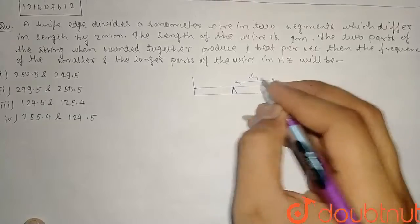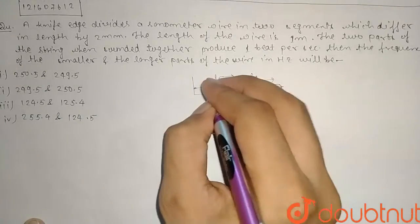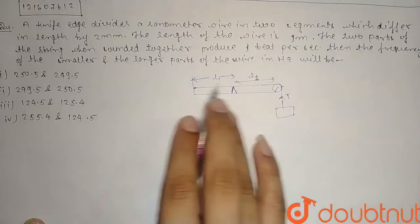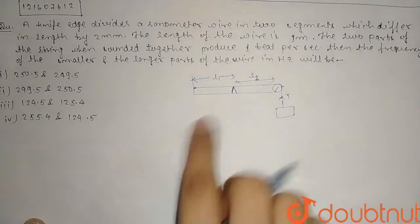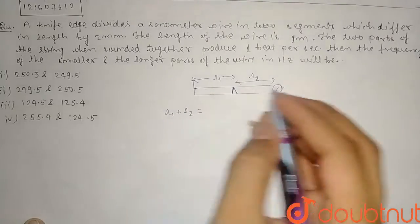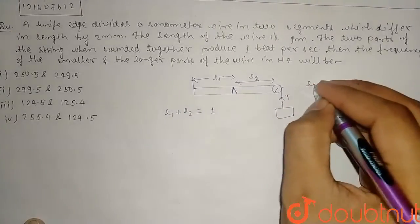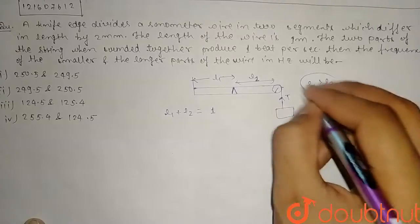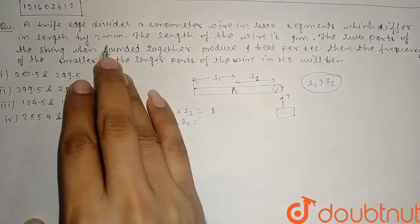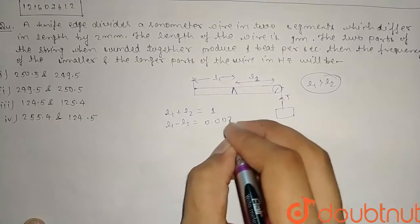Do part mein isko hum log divide karti hain. Wo bol hai ki in dono mein jo difference hai, wo kya hai guys? 2 mm ka difference hai. Sabse pehli baat, to main likhta hoon L1 plus L2 ki jo value hai. Kyunki length jo hai wire ki wo 1 meter hai, to L1 plus L2 is equal to 1. Mein yahan maan leta hoon L1 is greater than L2. Mein aisa maan ta hoon. To L1 minus L2 ki jo value hogi ki, wo kya hogi guys? 2 mm, kyunki dono ki length 2 mm se differ karti hai, yaani 0.002.